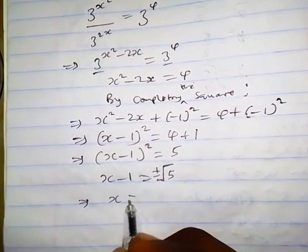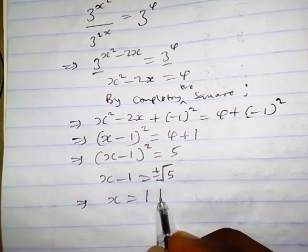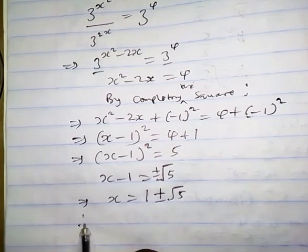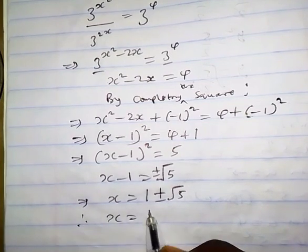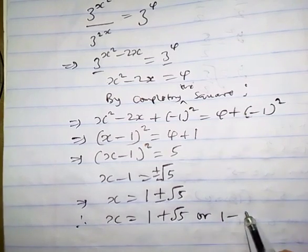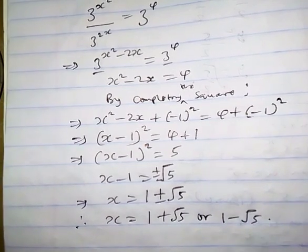Which implies s equals, this guy goes to the right, so plus 1 plus or minus square root of 5. Therefore s equals 1 plus root of 5 or 1 minus root of 5.